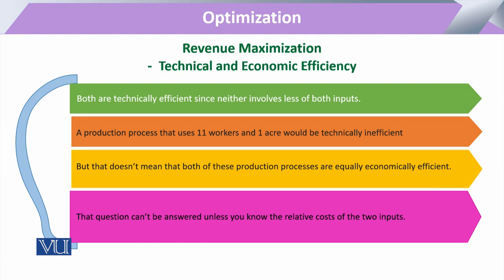These two topics are very lengthy and require detailed discussion. When we work on the production possibility frontier, it gives us that particular point where output is produced at the edge of that curve. We say the firm, economy, or production setup is efficient — meaning all available resources are utilized for the production of output and nothing is left back.